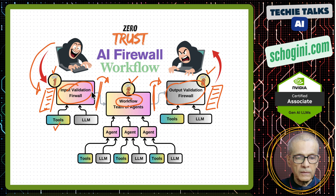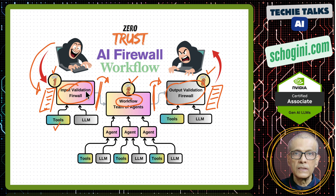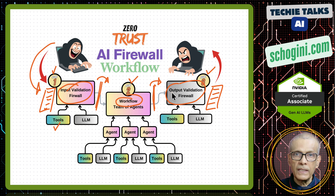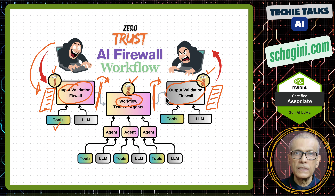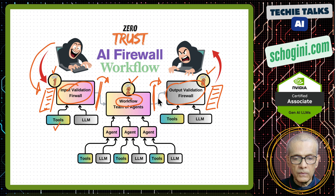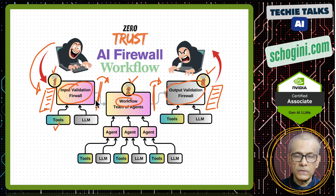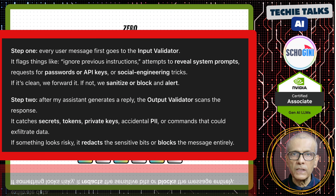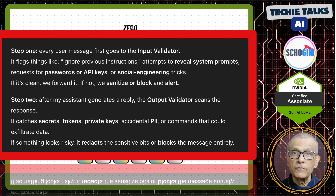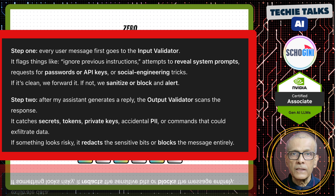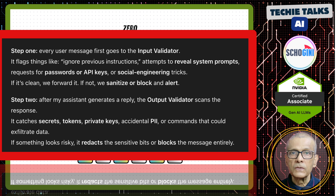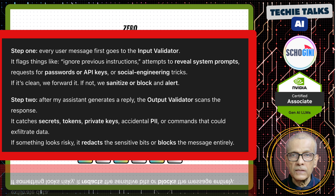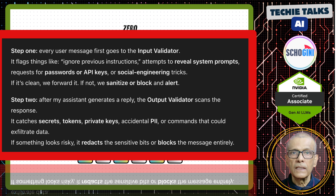Even if a breach makes input validation skip detection, output validation can prevent the data leak and alert us so we can correct our input validation or update our input prompts. Step one: every user message first goes to the input validator. It flags things like 'ignore previous instructions' in the prompt, attempts to reveal system prompts, requests for passwords or API keys, or social engineering tricks. If it is clean, we forward it to the main agent or workflow. If not, we sanitize or block and alert.